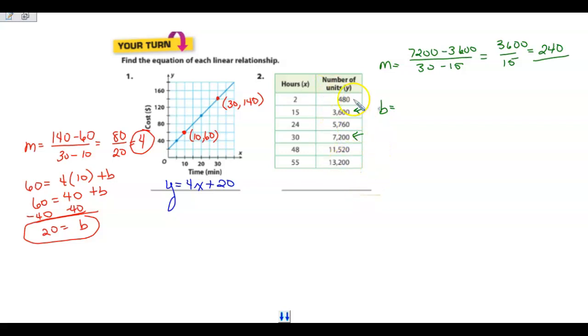I can pick any of these. Let's go with this ordered pair. My y is 480. My slope, we said, was 240. My hours is 2. So my x is 2.